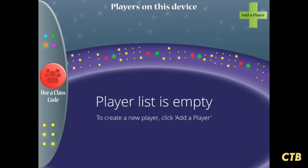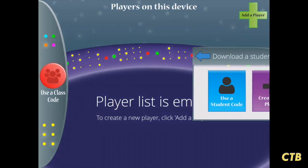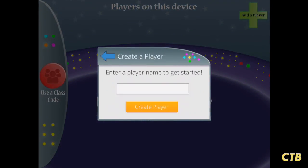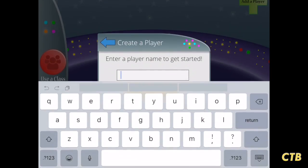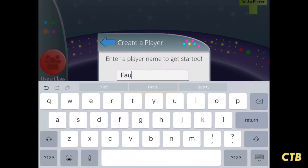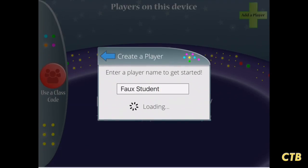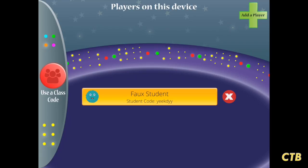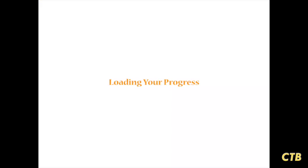So on this first screen here, we'll start by tapping on Add a Player. And we're going to create a new player here. We'll call him or her Faux Student. There we go. Now we tap on Faux Student to begin.